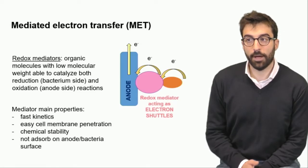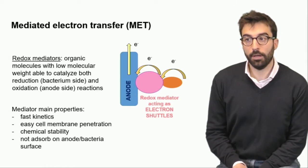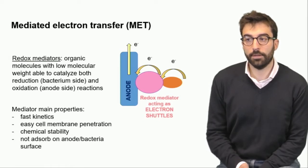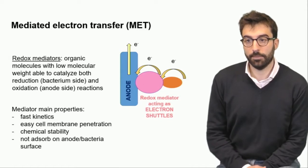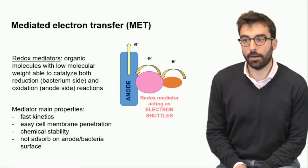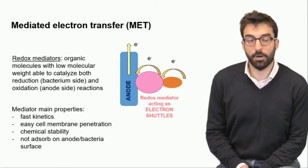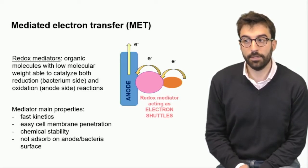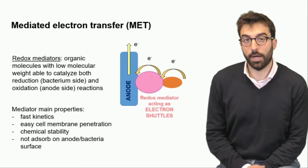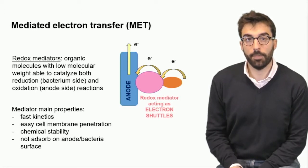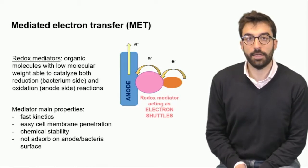Another solution is to have mediated electron transfer. In this case, redox mediators are organic molecules with low molecular weight that are able to activate a redox process. They transfer with their activity the electrons from the bacteria directly to the anode. The main properties of these mediators are they need to have fast kinetics, easy cell membrane penetration, but also not be absorbed to anode or bacteria surface. It means that they have to keep an intermediate position between the anode and the bacteria and, of course, they have to be chemically stable.